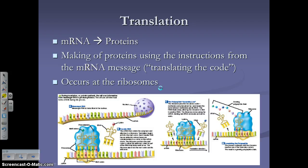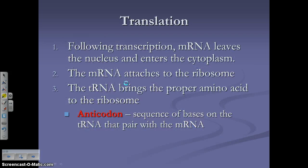That brings us to translation. Transcription was using DNA to make a molecule of mRNA. Now, translation is using that mRNA to make proteins — big picture, mRNA to proteins. Translation is the making of proteins using the instructions from the mRNA message, and it occurs at the ribosomes. Ribosomes make proteins — remember: ribosomes, ribs, proteins.